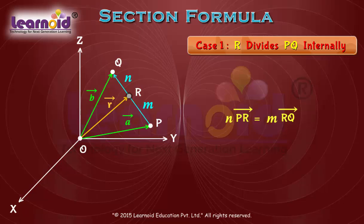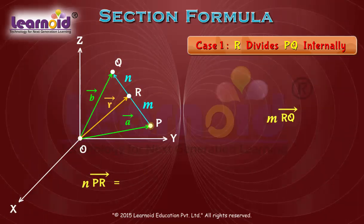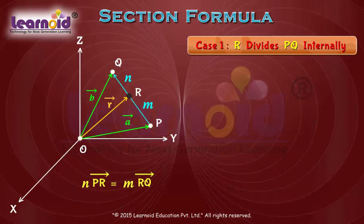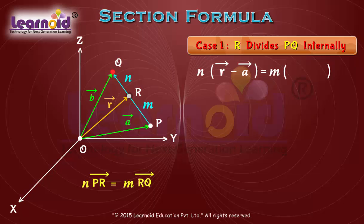And we have a relation n PR is equal to m RQ between them. So, we can write n into vector r minus a is equal to m into vector b minus r.